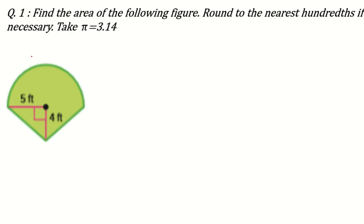Let's start the video. The question is: find the area of the following figure, rounded to the nearest hundreds. I am sure you have learned the formulas for the area of a circle, triangle, and trapezoid — I made separate videos for those, so go through them if you missed them. In a composite figure, you try to join or divide the figure into known shapes. Here, by joining with a line, we get one semicircle on top and two triangles below.